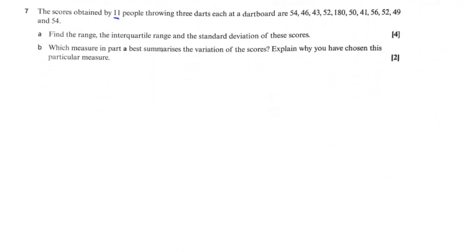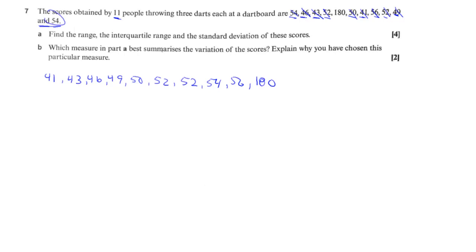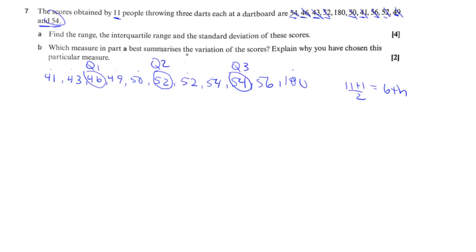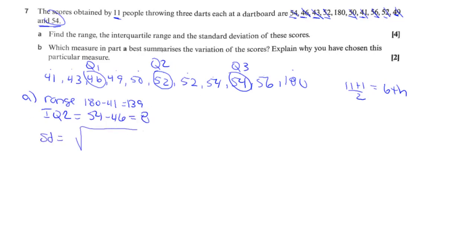Number seven: we've got 11 people with dart scores, and they want us to find the range, interquartile range, standard deviation, and scores. With 11 values, the sixth is the median. The range is 180 minus 41, which is 139. Q1 and Q3 are identified, and the IQR is the third quartile minus the first quartile, which equals 8.